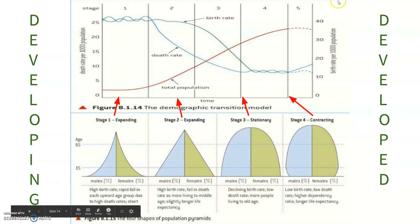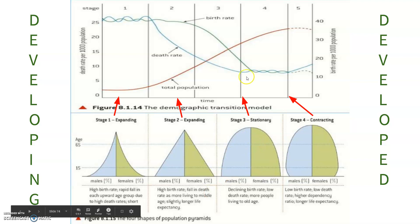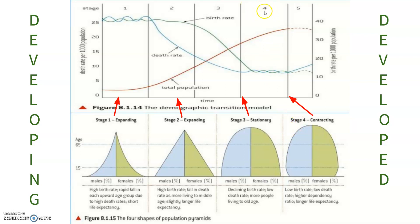Developing countries are more on the left, and developed countries are more on the right. Your high growth rate is over here. Stage one has the more normal pyramid shape. Your lowering growth rate is stage two. Your rectangular zero growth is around stage three. And stage four has the negative growth rate. Then there's the hypothetical possible stage five, which is not officially in APES.